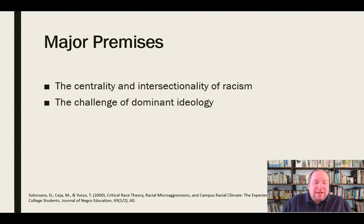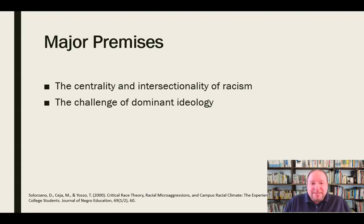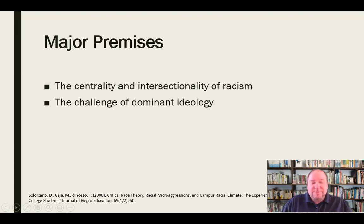Another major premise is the challenge of the dominant ideology. Critical race theory seeks to challenge things like the belief that we have the ability to be truly neutral, objective, and colorblind — those things are myths. Neutrality, objectivity, and colorblindness are impossible given the embedded nature of racism in American culture. Part of the first step to overcoming these things is to recognize that they are impossible, and critical race theory seeks to help us recognize that.